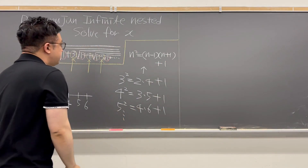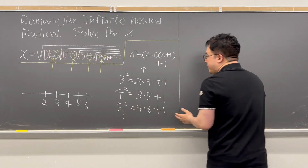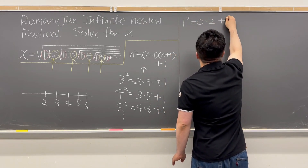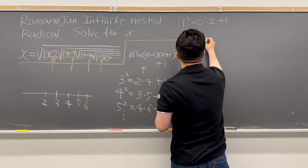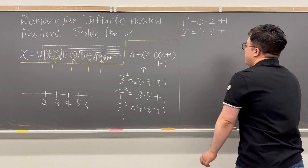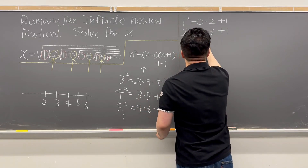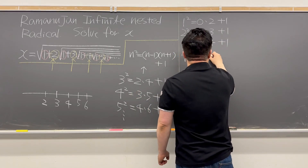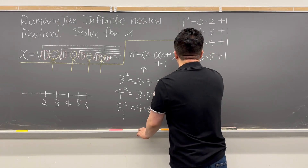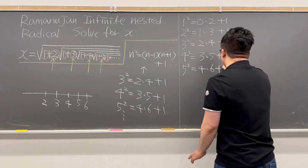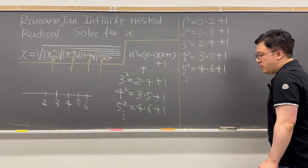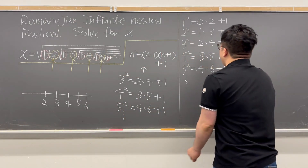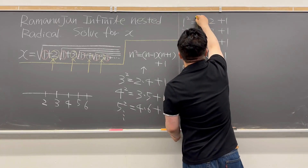Let's list about five numbers using this expression. 1 squared equals 0 times 2 plus 1. Then 2 squared equals 1 times 3 plus 1. Then 3 squared equals 2 times 4 plus 1. Then 4 squared equals 3 times 5 plus 1. And 5 squared equals 4 times 6 plus 1, and this will continue. The numbers 2, 3, 4, 5, and so on — those are the ones I circled in yellow.